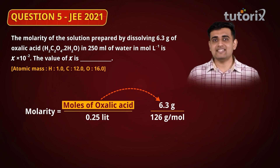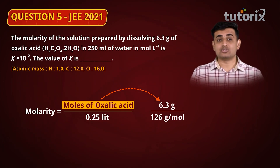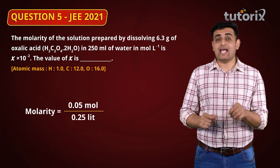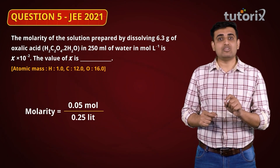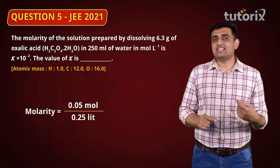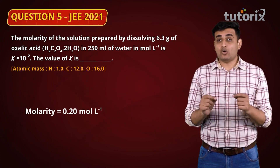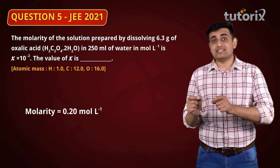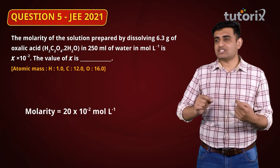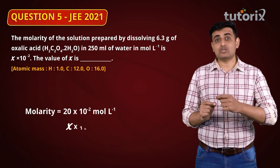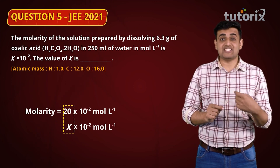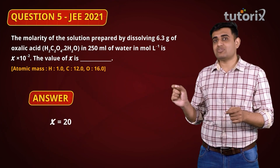The molecular mass of oxalic acid (126 g/mol) is obtained by adding the atomic masses of carbon, hydrogen, and oxygen. Using the moles and volume in the molarity equation gives molarity = 0.20 mol/L, which can be written as 20 × 10⁻². Equating with the given expression, x = 20. The correct answer is 20.